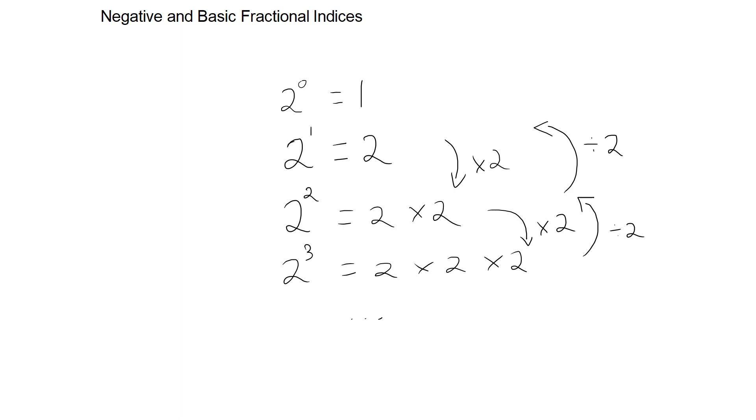So to go from 2 to the power of 0 to 2 to the minus 1, we have 1 divided by 2, which is just 1 half. To go from 2 to the minus 1 to 2 to the minus 2, we will divide by 2, which is 1 quarter, but 1 quarter is 1 over 2 to the power of 2.